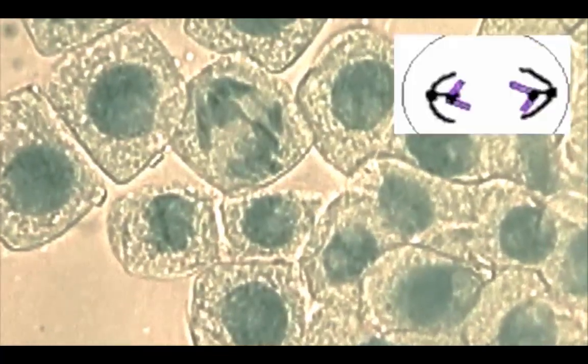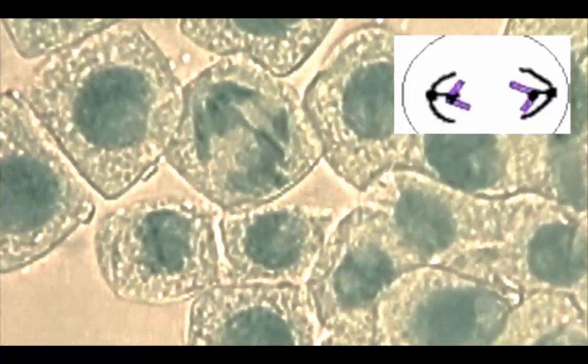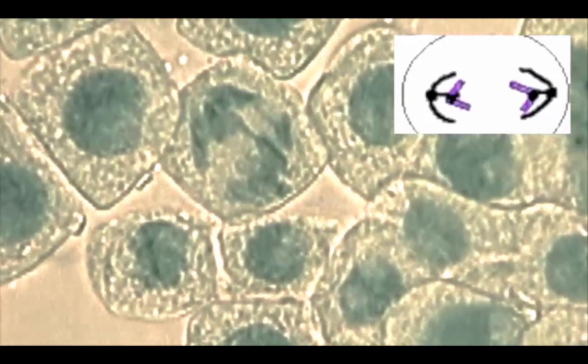The center cell here is clearly going through anaphase, where the sister chromatids are separated and moved to opposite poles of the cell.